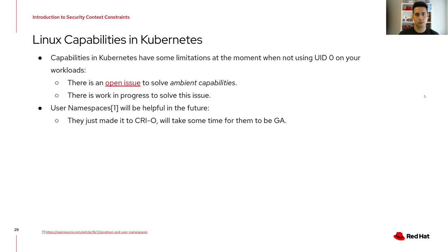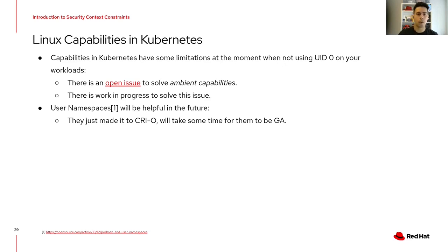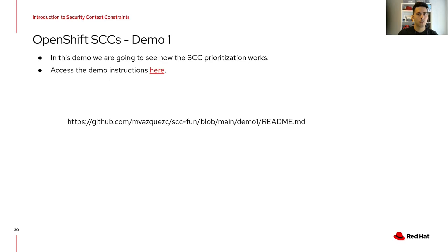Regarding Linux capabilities in Kubernetes: capabilities have some limitations at the moment when not using UID 0 on your workloads, which is why you have to use file capabilities. There is an open issue in the community to solve ambient capabilities support in Kubernetes, which will allow use of ambient capabilities instead of file capabilities. Also, user namespaces support has just made it into CRI-O and will take time to be GA, but will be a useful feature for workloads requiring UID 0 and capabilities. With that, we are done with the theory and can get started with demos.